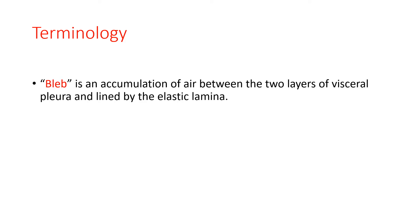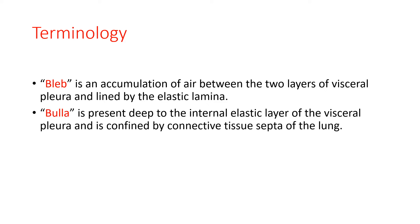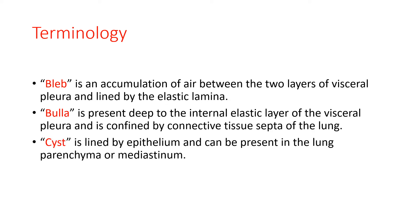Before we go into further detail, we need to know some terminology. A bleb is an accumulation of air between the two layers of visceral pleura, lined by the elastic lamina. Bullae are present deep to the internal elastic layer of the visceral pleura and are confined by the connective tissue septa of the lung. A cyst is lined by epithelium and can be present in the lung parenchyma or mediastinum, and it resembles bullae on radiograph.